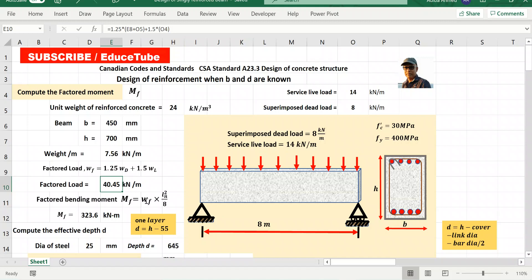Now factored bending moment is very easy formula. I mean wL square by 8 because it is simply supported. This beam rests on a pin and roller supports. So very easily we can find this moment.